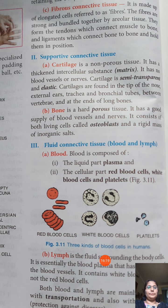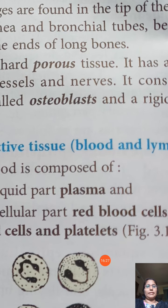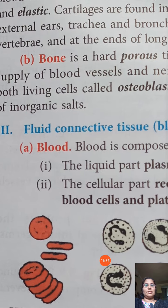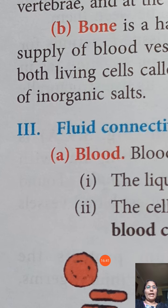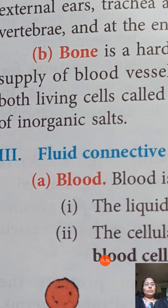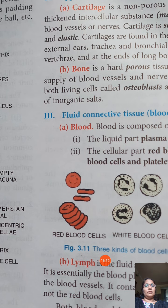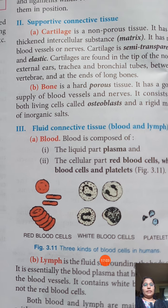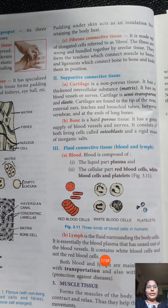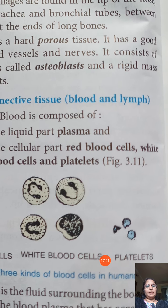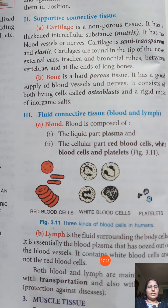Bone cells are known as osteoblasts. Bone also contains many inorganic salts — calcium, phosphorus, etc. — deposited between the bone cells.